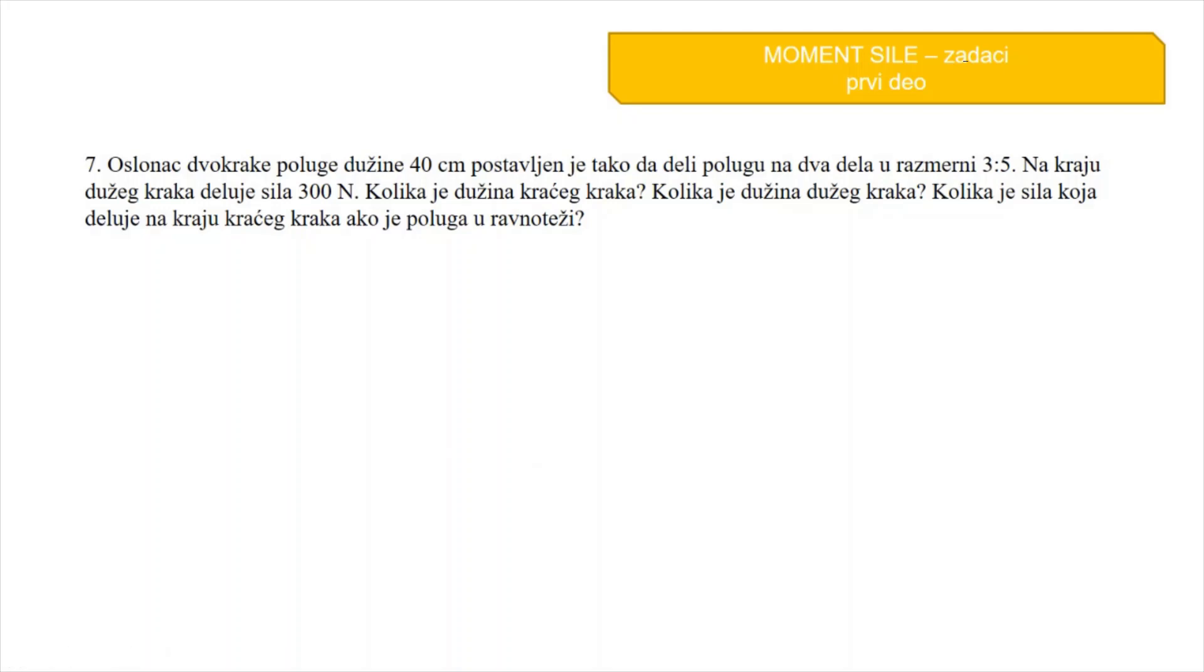Osnovna dvokrake poluge dužine 40 cm postavljen je tako da deli polugu na dva dela u razmjeri 3 prema 5. Na kraju duže kraka deluje sjela 300 N. Kolika je dužina kraćeg kraka, kolika je dužina duže kraka, kolika je sila koja deluje na kraju kraćeg kraka ako je poluga u ravnoteži. Hajde da vidimo šta nam je dato. L to je dužina cele poluge 40 cm, to je 0.4 m.